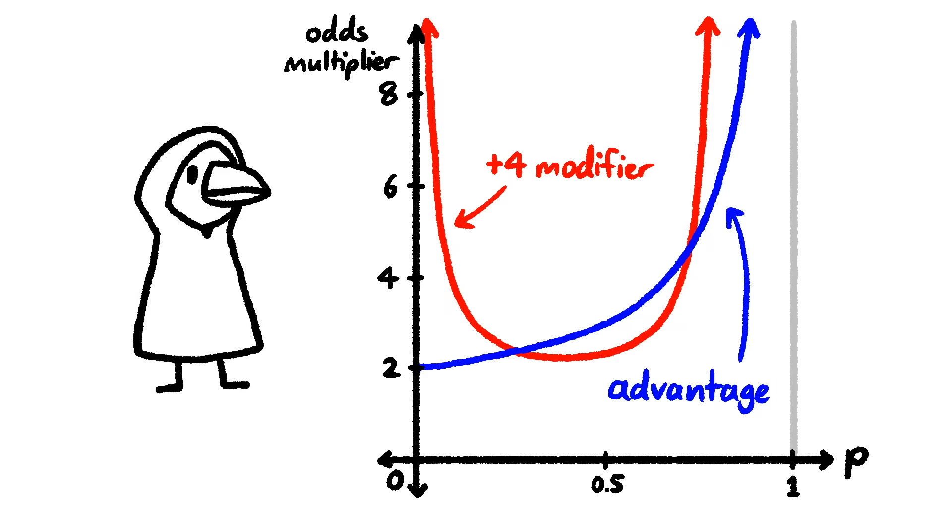Modifiers, on the other hand, are even weirder. Since modifiers can make impossible checks possible, and make likely checks impossible to fail, the change in odds shoots off to infinity at both ends.